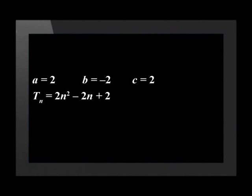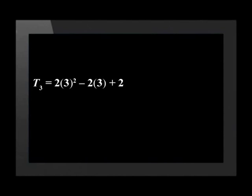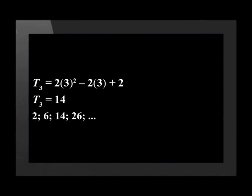Put these values back into the general term and we get Tn equals 2n squared minus 2n plus 2, and that is the nth term. You should always do a quick check. If n equals 3, we get term 3 equals 2 times 3 squared minus 2 times 3 plus 2, which is equal to 14. This was the value of the third term in the sequence, so our formula for the nth term is correct. While this method of using simultaneous equations to find a, b and c is very successful, it is quite long. In the next lesson we look at a quicker method.